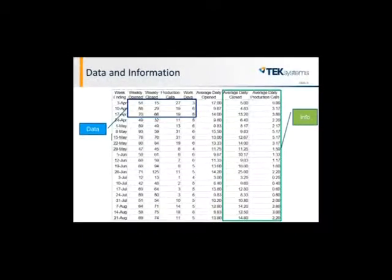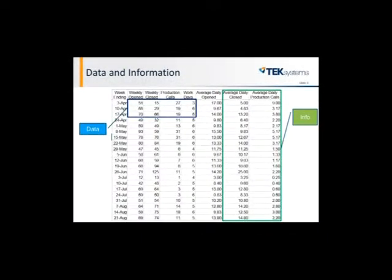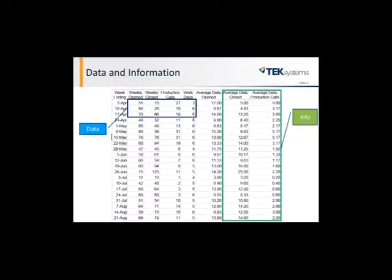Here's an example of what you might call data. This is a set of information about records, incidents, or production calls. The data itself is just the items in each individual cell — 51, 29, 19. In and of itself it doesn't tell me a lot. It tells me that on April 3rd there were 51 open records that week and 15 got closed. I have some data but I'm not sure what I can do with that.